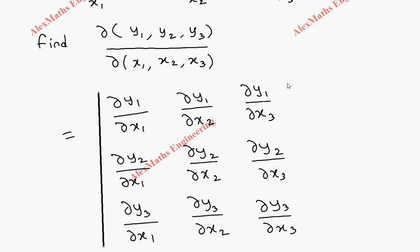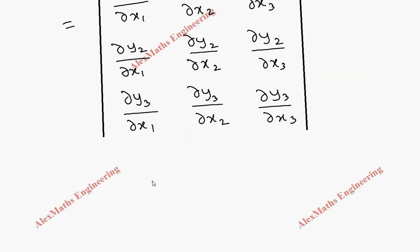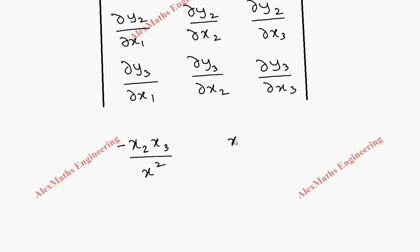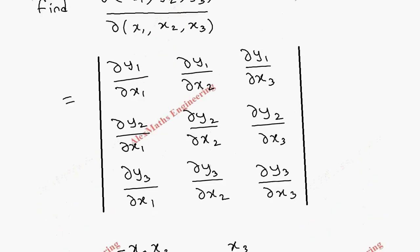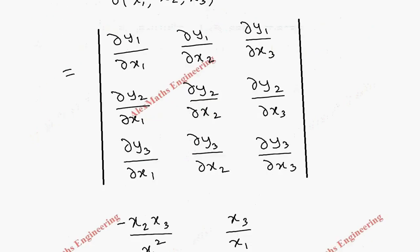Let's find all the partial derivatives and fill the determinant. First, y1 with respect to x1: x2 and x3 are constant, and differentiating 1/x1 gives minus 1/x1², so we get −x2*x3/x1². Then y1 with respect to x2: x3 and x1 are constant, so we get x3/x1. Then y1 with respect to x3: x2 and x1 are constant, so we get x2/x1.